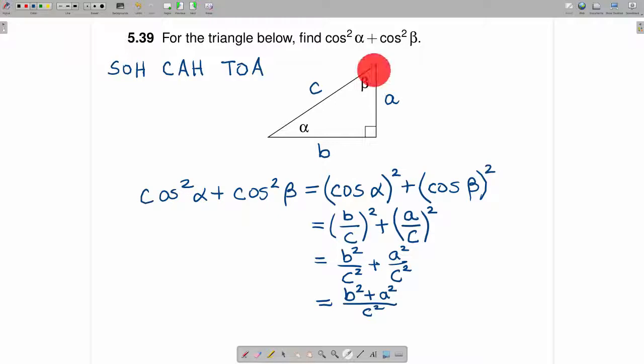However, this is a right triangle, so we know from the Pythagorean theorem that A squared plus B squared is equal to C squared.